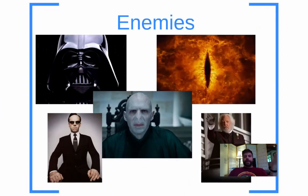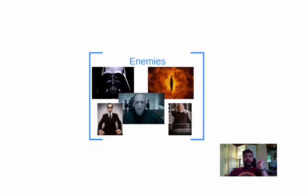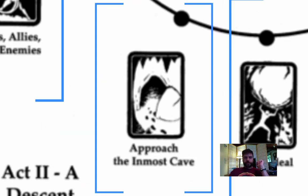And of course we have Enemies, which really doesn't need much explanation. We have all the big baddies: President Snow, Sauron, He Who Shall Not Be Named, Agent Smith, and Darth Vader — the big head honcho enemies. Usually at this point in the story, the main enemy is at least met for the first time.